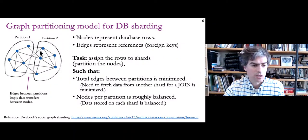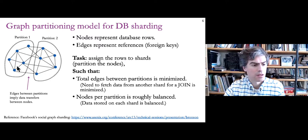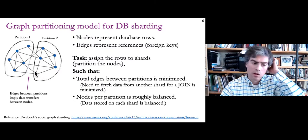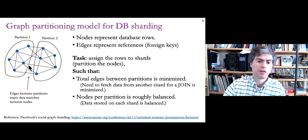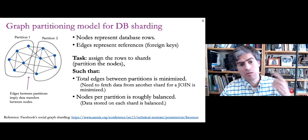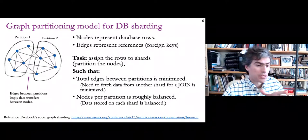When we have an edge crossing a partition, a row in one partition refers to data in the other. Edges within the same partition represent cheap lookups, but getting data across partitions involves a request to another partition. We want to involve as few partitions as possible in our queries so that we achieve scale. If we have n nodes, we want to handle n times as many queries, meaning every query should ideally be restricted to just one node.